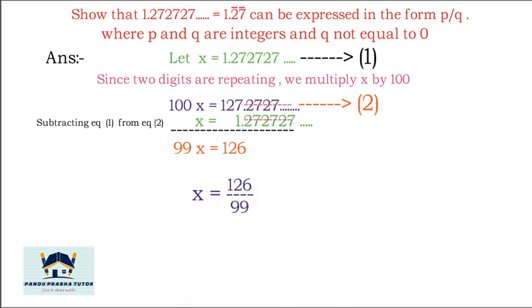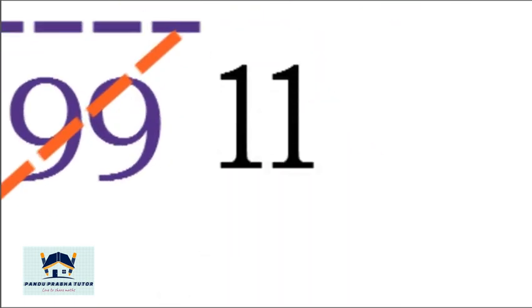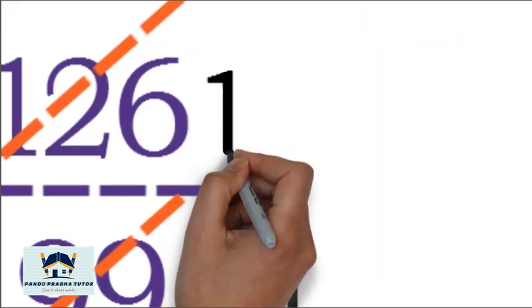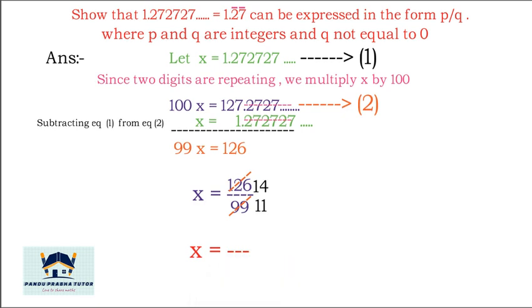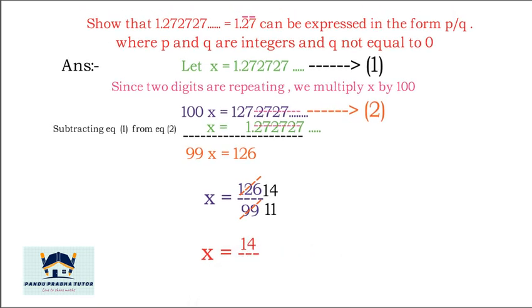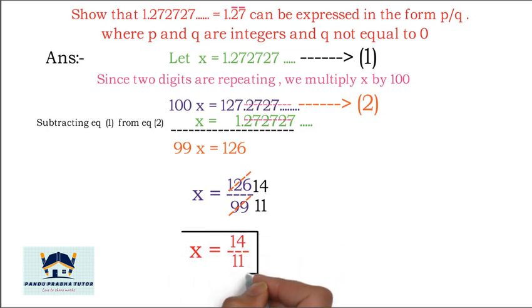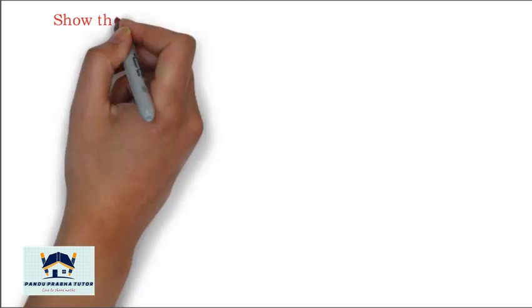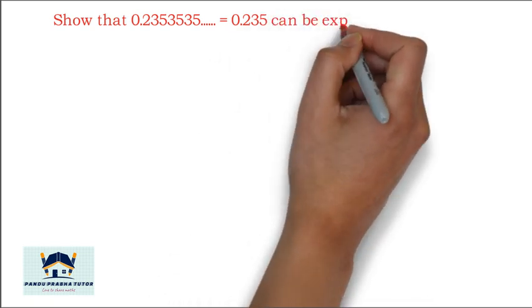100x minus x is 99x. 127 minus 1 is 126. So 99x = 126, giving x = 126/99. Dividing both by 9, we get x = 14/11. This is the p/q form of 1.2̄7̄.